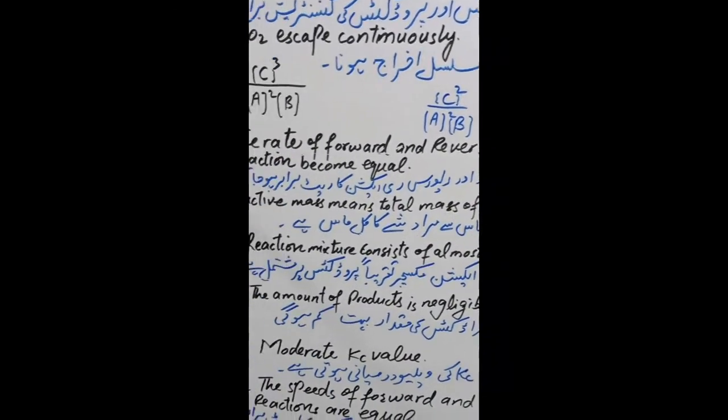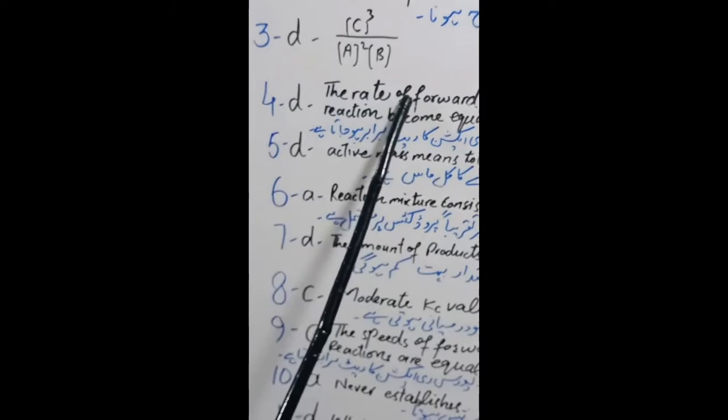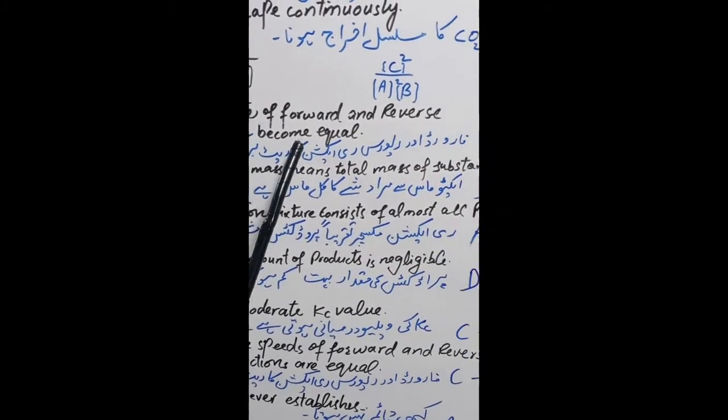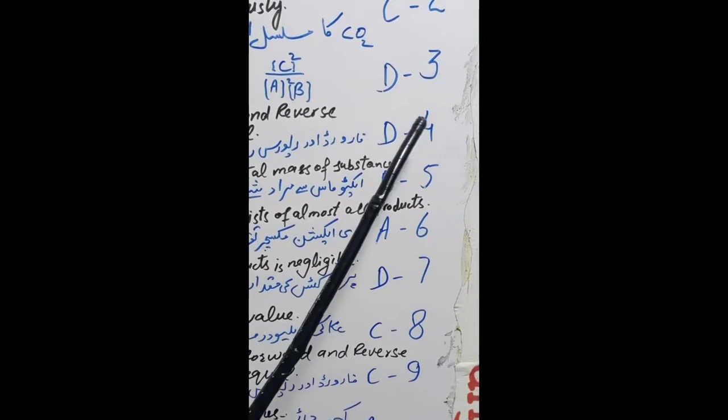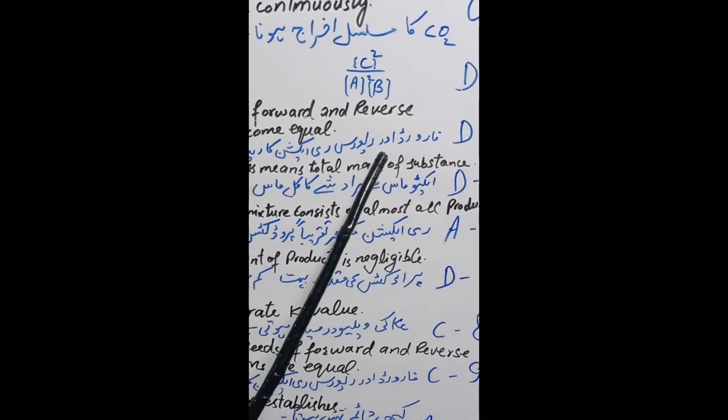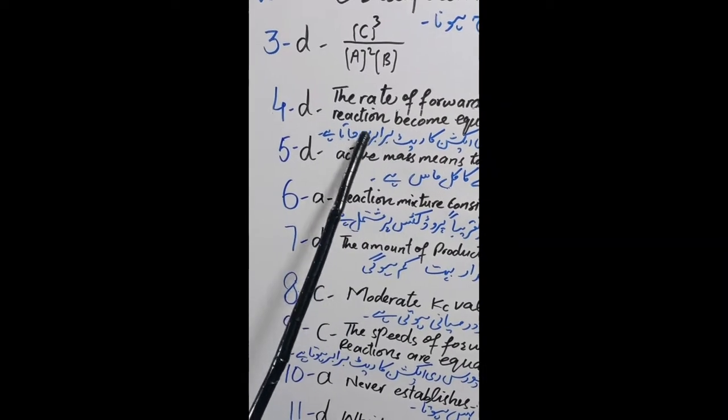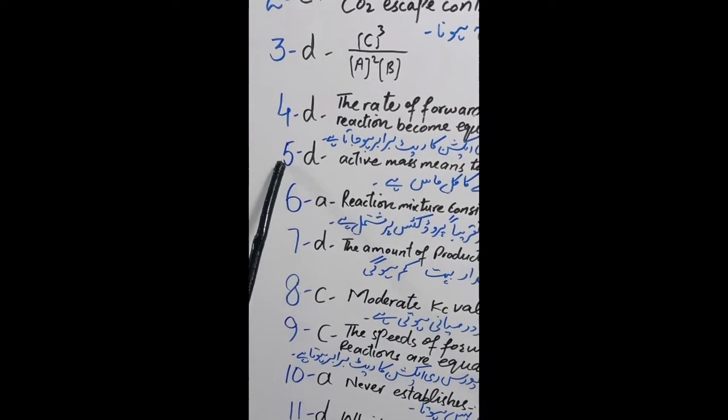Question 4: D. The rate of forward and reverse reaction become equal. Answer D. Forward aur reverse reaction ka rate barabar ho jata hai.